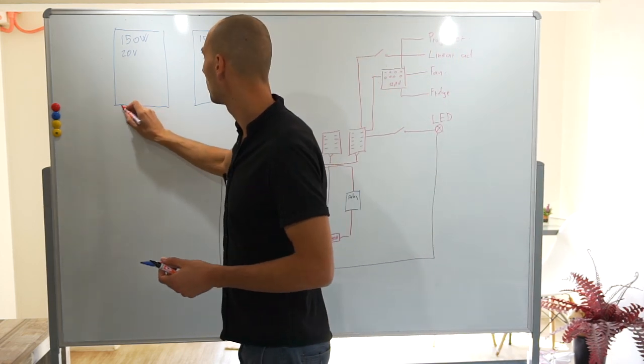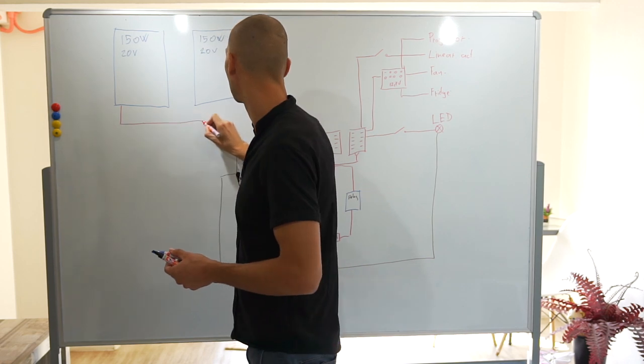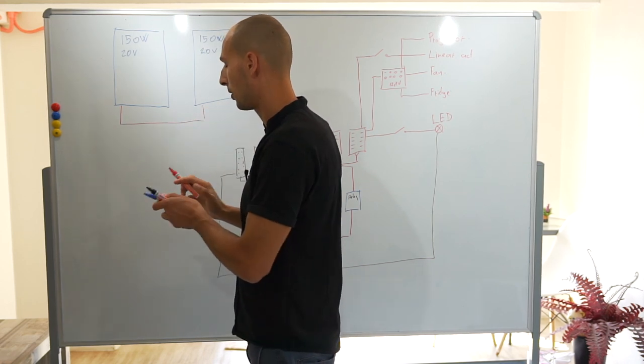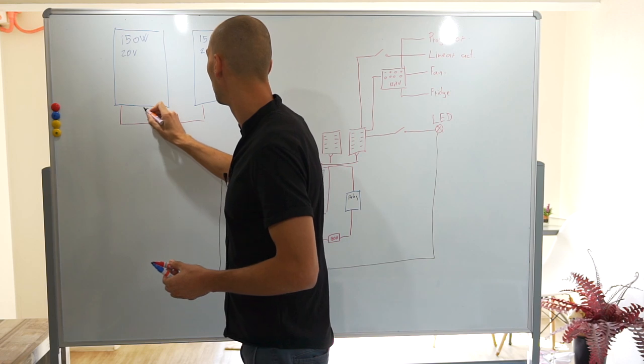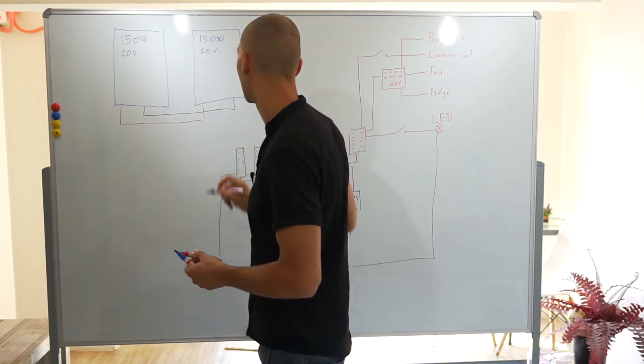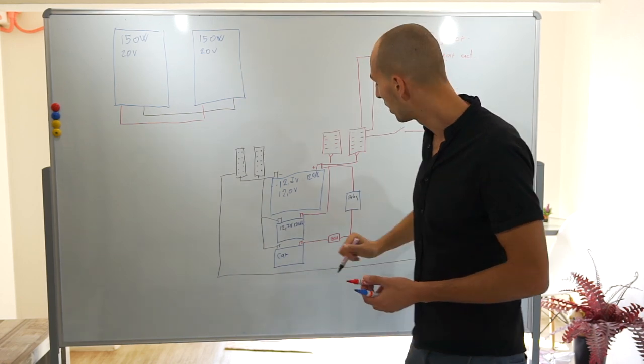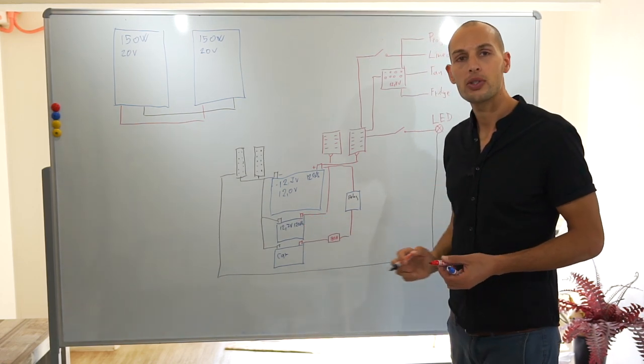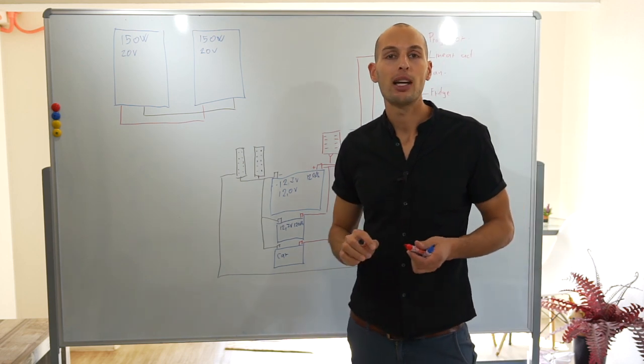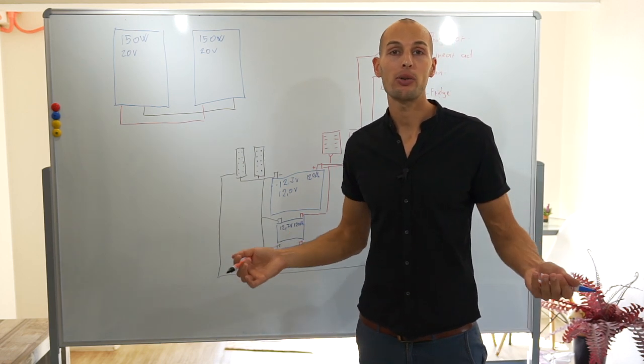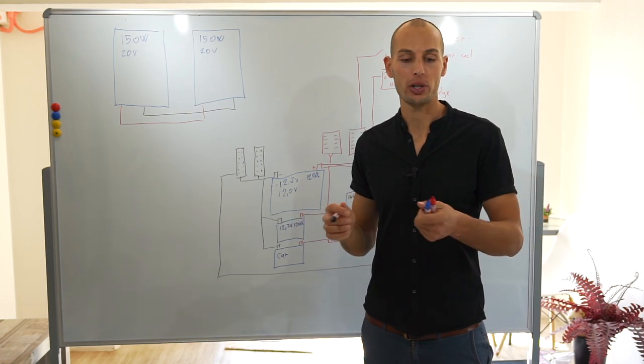So that's super easy. You connect positive on positive and negative to negative. So what happens next when you have a 20 volt system and your battery is 12.7? That would probably damage the battery if you wire it directly. Plus if the battery is charged you don't want to be overcharging it.